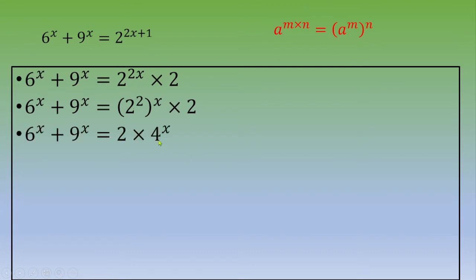2 times 4 power x. Now you're going to divide by 4 power x, because 4 power x is different from zero.